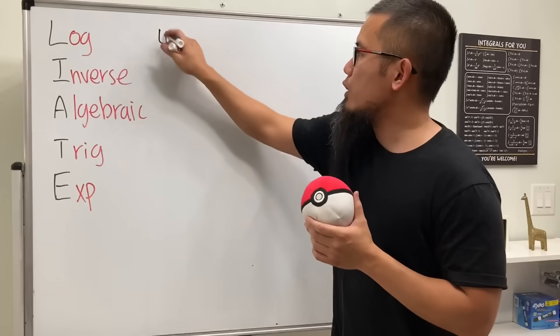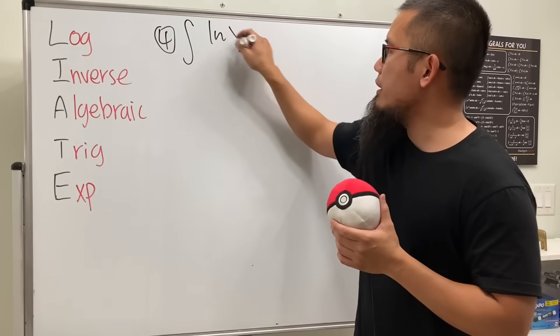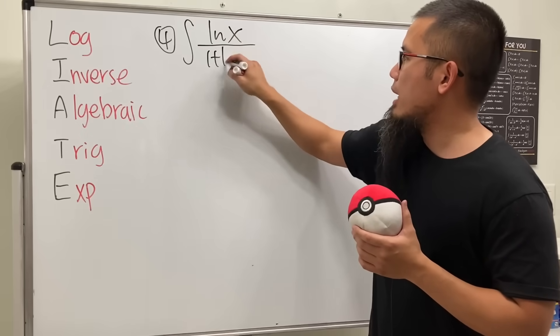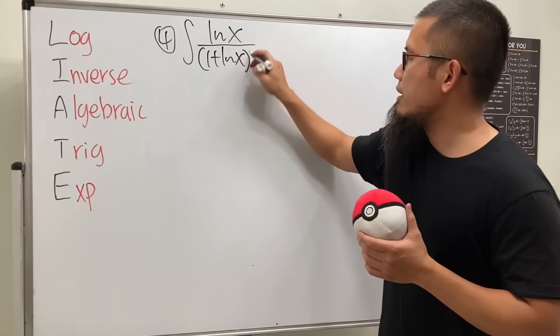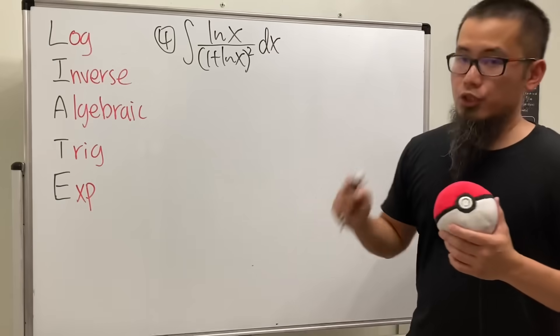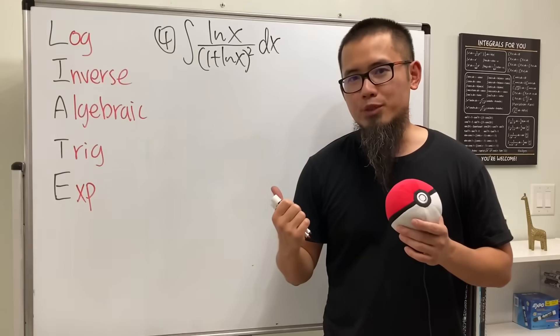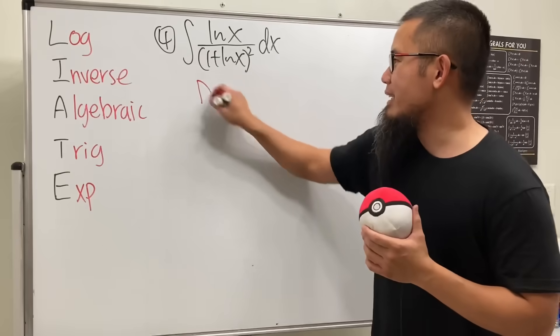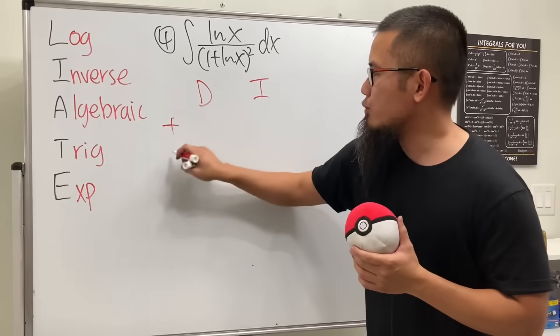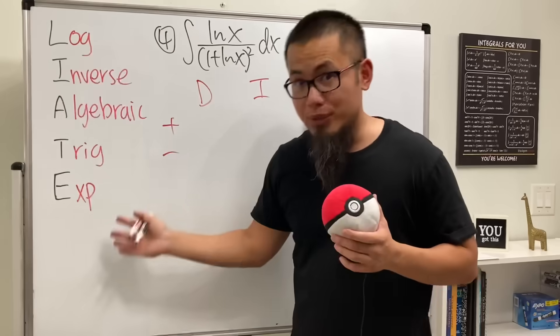Okay, this is number 4. Let's take a look at the integral of ln x over 1 plus ln x squared dx. Trust me, we do integration by parts with this one. All right, so let's go ahead and put down a D and also the I plus or minus. And thanks to this,